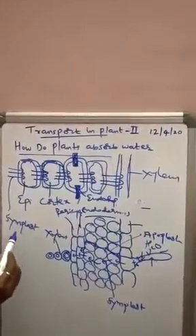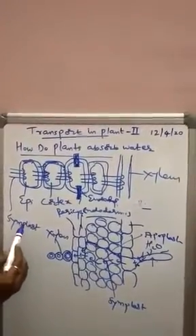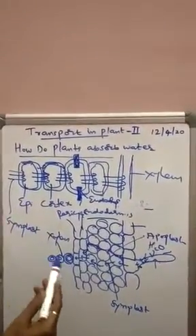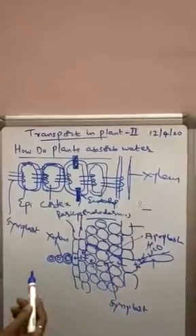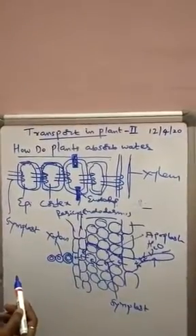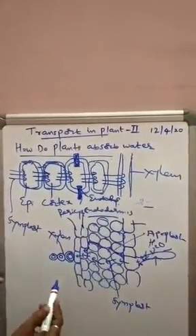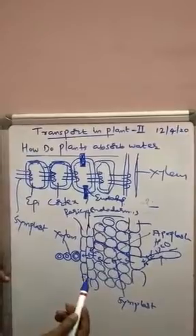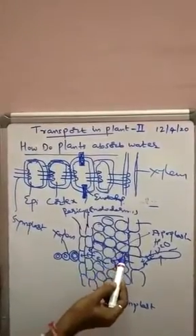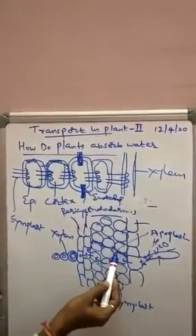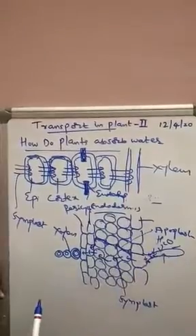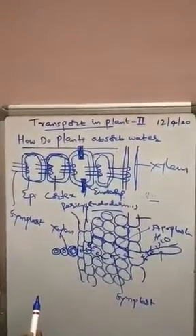The symplast pathway can be aided by cytoplasmic streaming movement within the cell. Bulk flow of water along the concentration gradient mainly occurs through non-living continuity, that is through the apoplast pathway.